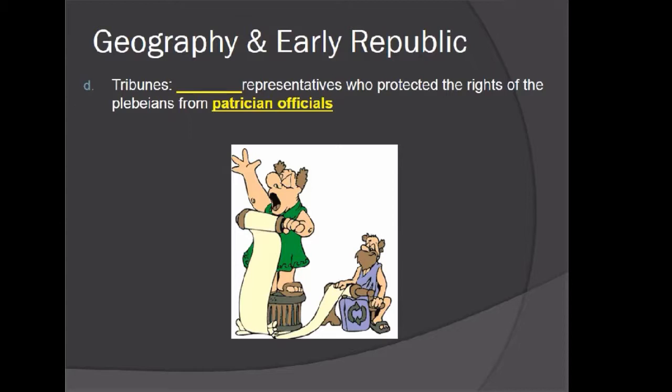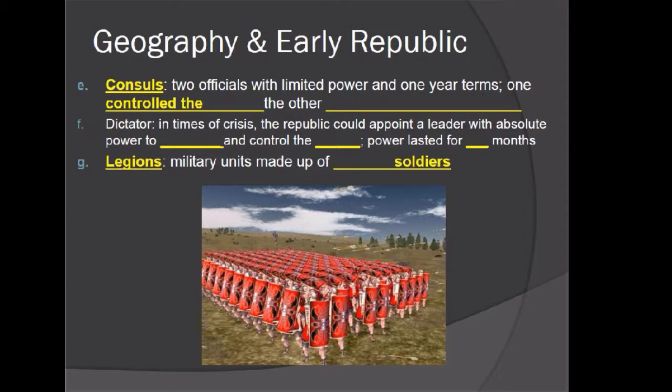Tribunes were elected representatives who protected the rights of the plebeians from the patrician officials. Originally, because the patrician officials were very wealthy but the plebeians were the majority, the patricians realized they had to give up some governmental power to the plebeians. Consuls were two officials with limited power and one-year terms — one controlled the army and the other directed the government. The closest comparison to a consul is our president, who has control over government functions as well as the military.